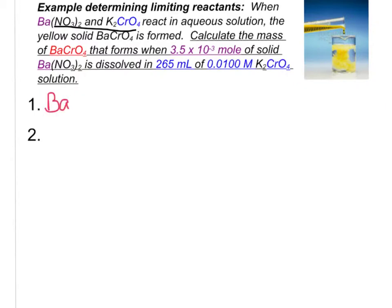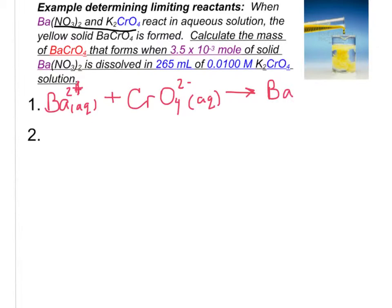The first thing we need to do is write our balanced chemical equation. I'm going to write the net ionic equation: barium 2 plus aqueous plus chromate dissolved in water, producing barium chromate as a solid precipitate. Now for the second step — we need to find the moles of the reactants.